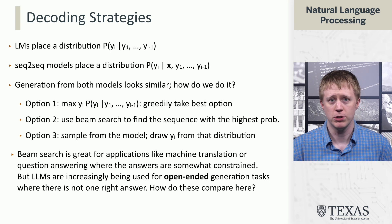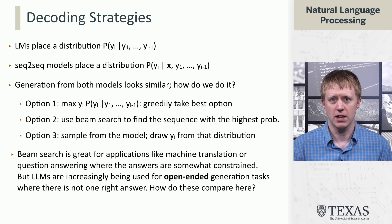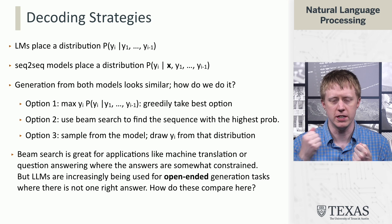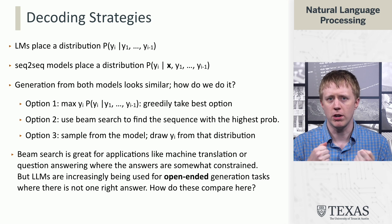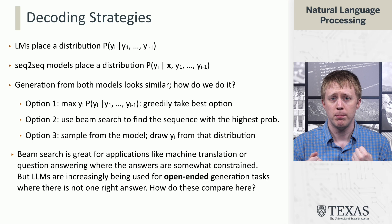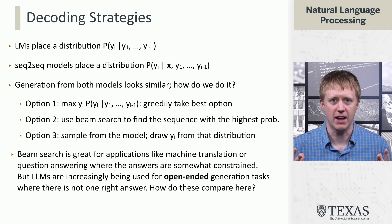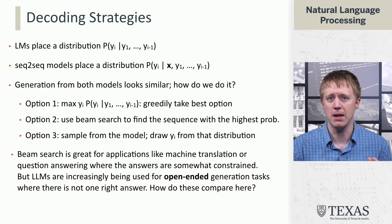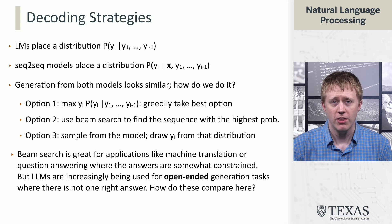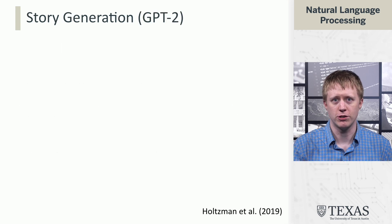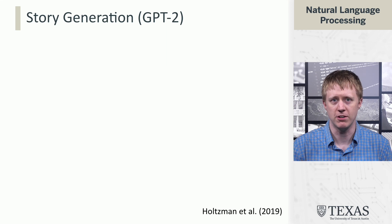Now you might think, why would you want to do that? Well, for an application like machine translation, where you really want a high-quality translation, you probably want to use something like Beam Search. But if you're using a language model for some sort of open-ended generation task, like trying to generate a story, there may not be one right answer, and you may be okay with more variety. This was one of the capabilities that started to arise with the GPT series of models, and particularly GPT-2.